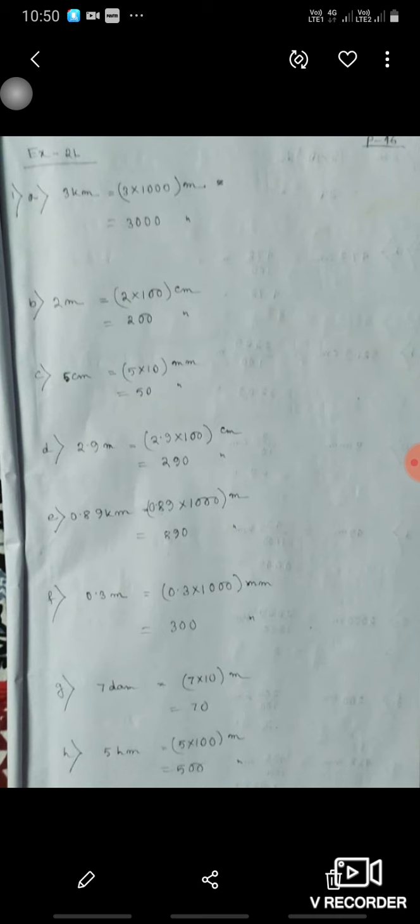3 kilometer means 3 into 1000 meter. 2 meter means 2 into 100 centimeter. 5 centimeter means 5 into 10 millimeter. 2.9 meter means 2.9 into 100 centimeter, that is 290 centimeter.